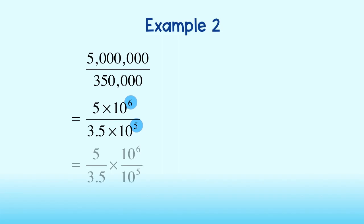Notice this time that our powers of 10 are positive because we are dealing with numbers larger than 1. Okay, let's rewrite this problem as the product of two fractions so that we can first divide 5 by 3.5 to get this very long decimal. We will round to the nearest 10th.